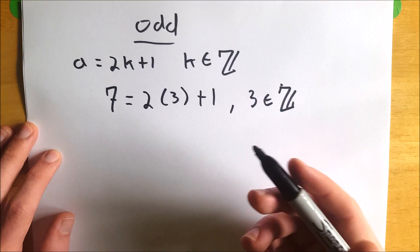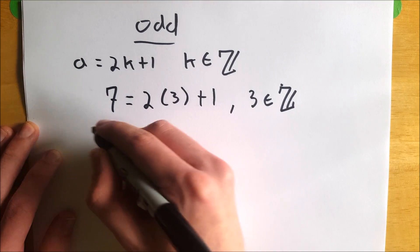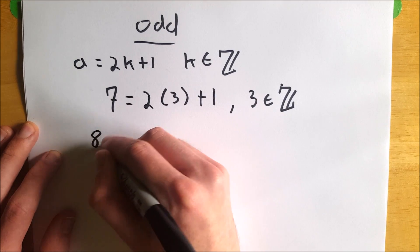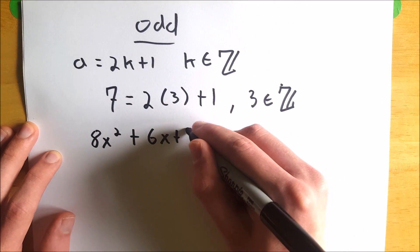You can also do this with variables, polynomials, that sort of thing. Let's look at an example of that. Let's say we have 8x squared plus 6x plus 7.